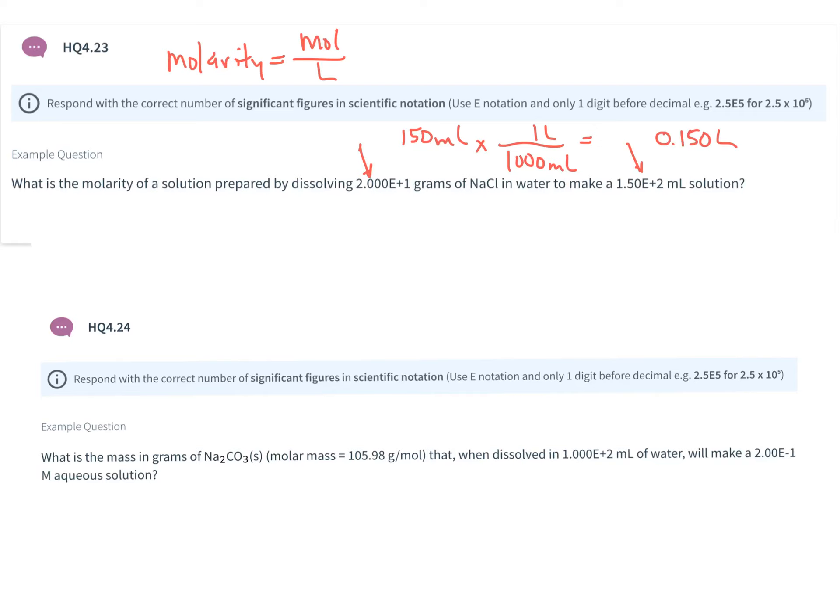So now to find moles. I know I have 20 grams of NaCl, and if I go to the periodic table of the elements, I look up sodium is 23 grams per mole, chloride is 35.45. So for one mole of sodium chloride, you would need to have 58.45 grams of sodium chloride.